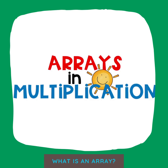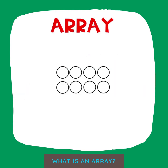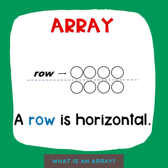Arrays in multiplication. This is an array. An array has rows. A row is horizontal. Horizontal means from left to right, or sideways.